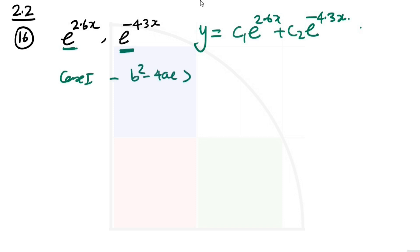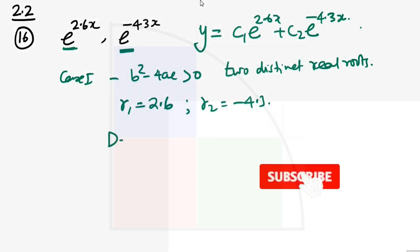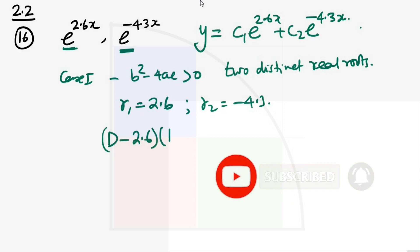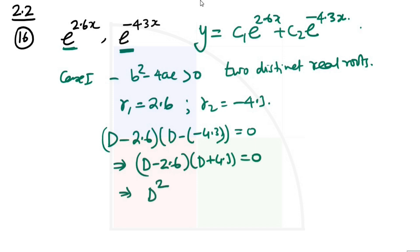The distinct real roots are: r1 is 2.6 and r2 is minus 4.3. Now from these roots we need to form the auxiliary equation. This will be very simple — we write (D minus 2.6) multiplied by (D plus 4.3) is equal to 0. Expanding this gives us D squared plus 4.1 D minus 11.18 is equal to 0.